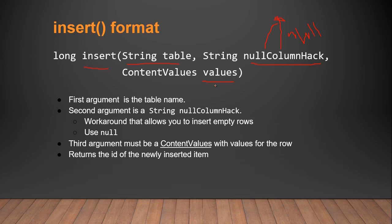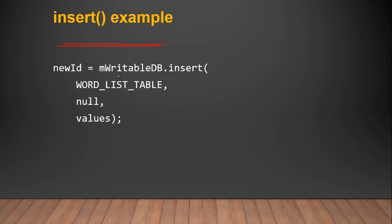Content values maps your data with a key — the key must be the column name — and you pass the data to it. First argument is table name, second is null column hack as a workaround to allow inserting an empty row. Third argument must contain ContentValues with values for the row. When the operation succeeds, insert returns the ID of the newly inserted row. Call the insert method with the database object, passing table name, null, and the ContentValues object.